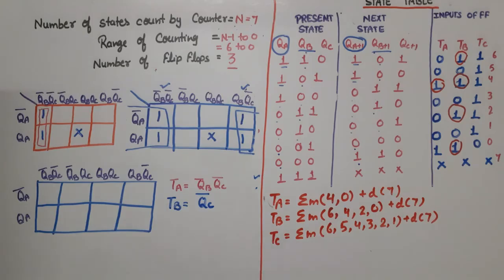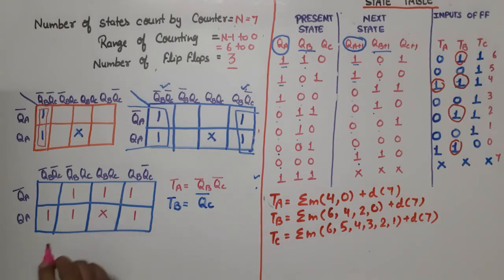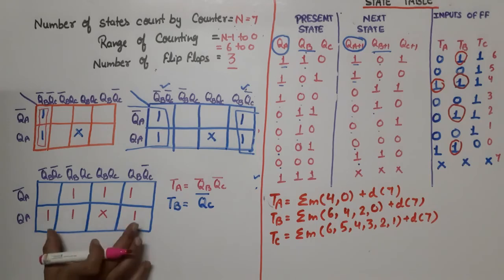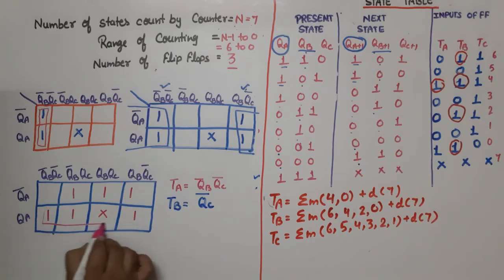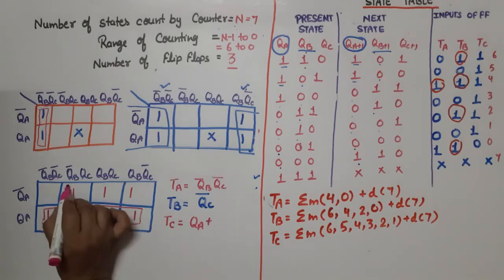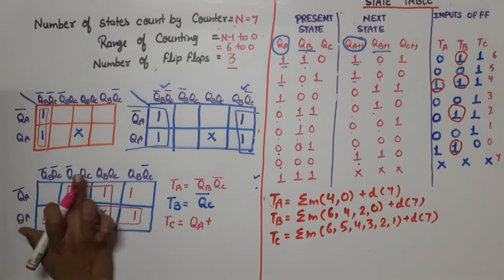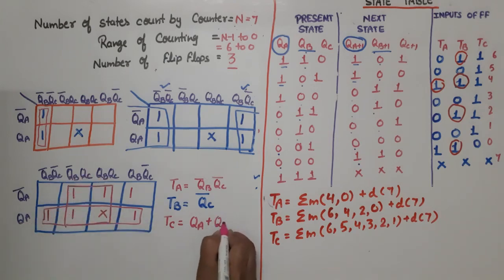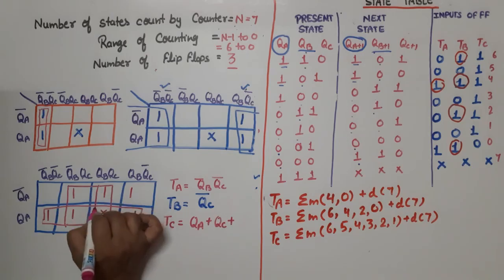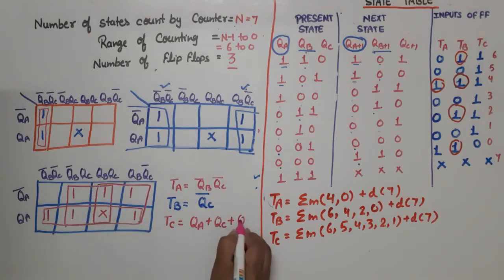For TC, the minterms are 1, 2, 3, 4, 5, and 6, with don't care at 7. We form a quad covering terms involving QA — giving the term QA. Then we cover remaining minterms with another quad giving QC, and one more group giving QB. Therefore, TC = QA + QC + QB.